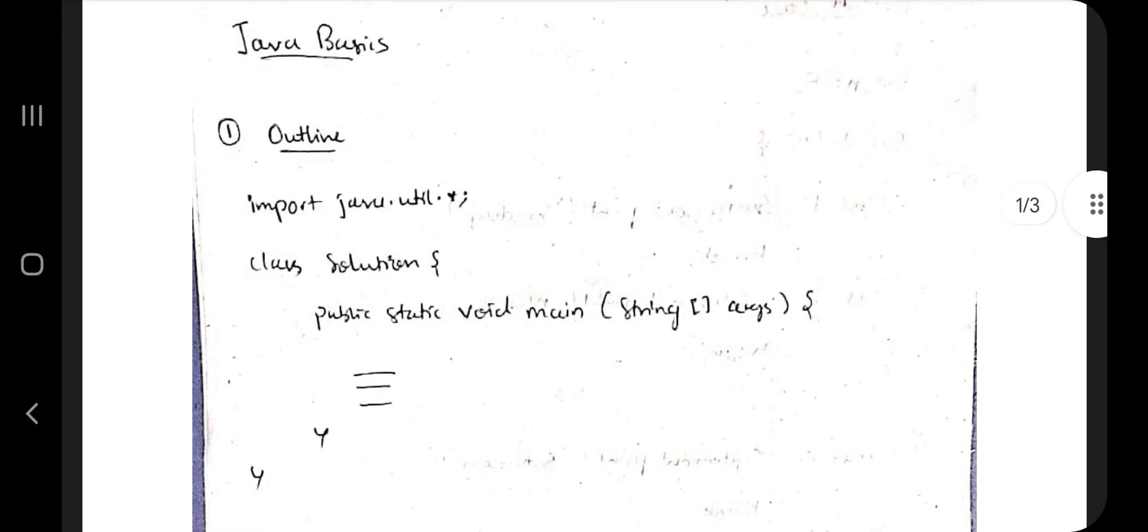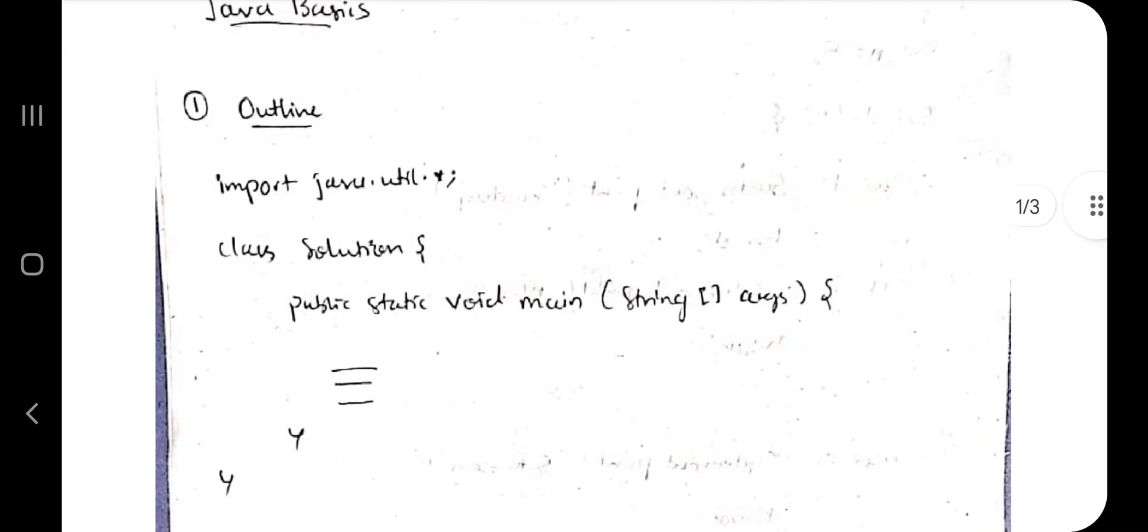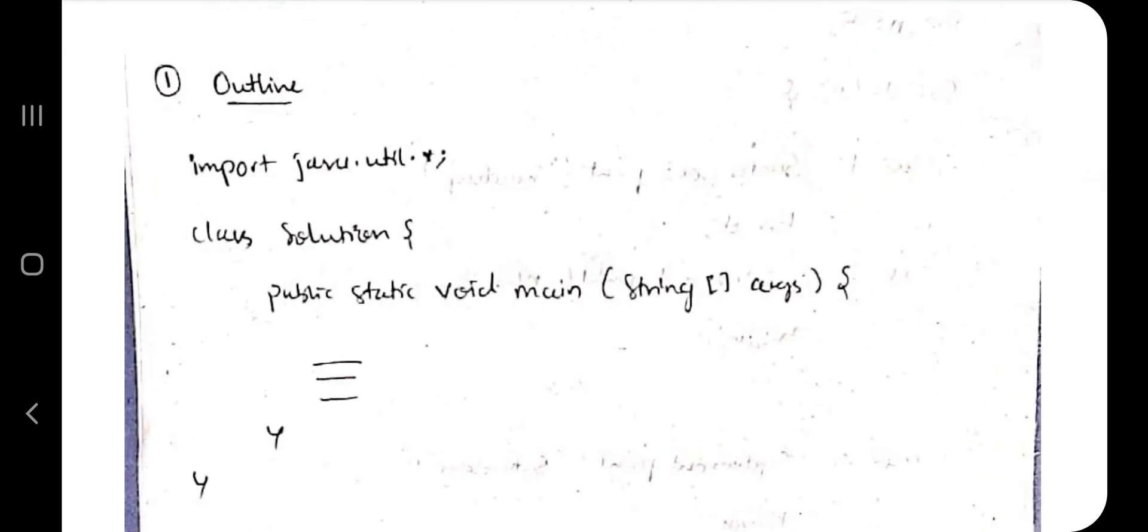The first thing which you need to know is the outline of any programming language. In Java, firstly you will write import java.util.star. This is the thing which will include to get the necessary functions for input-output. After that, you have to write class solution - just write class and any name of the class here.